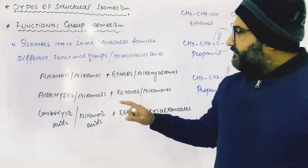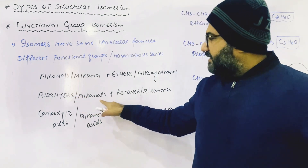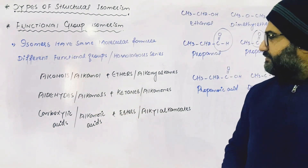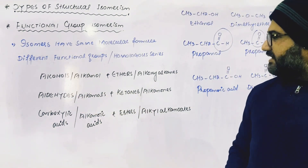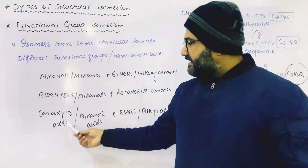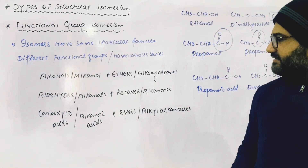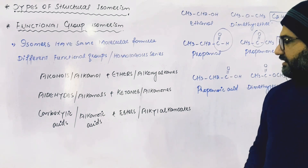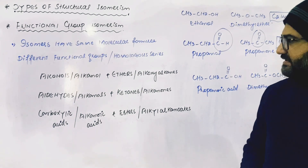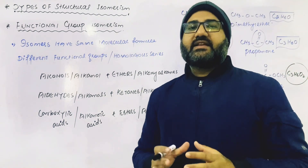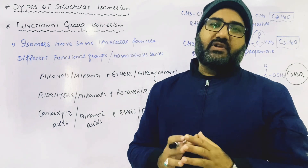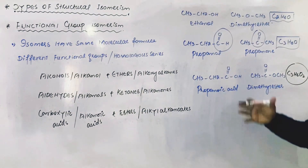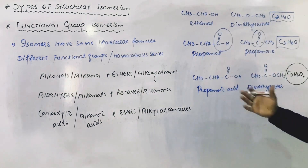In the same way, aldehydes (alkanals) are functional group isomers of ketones (alkanones). Carboxylic acids (alkanoic acids) are functional group isomers of esters (alkanoates), with the condition remaining the same — the molecular formula must be the same. Now let us discuss examples from these three categories.